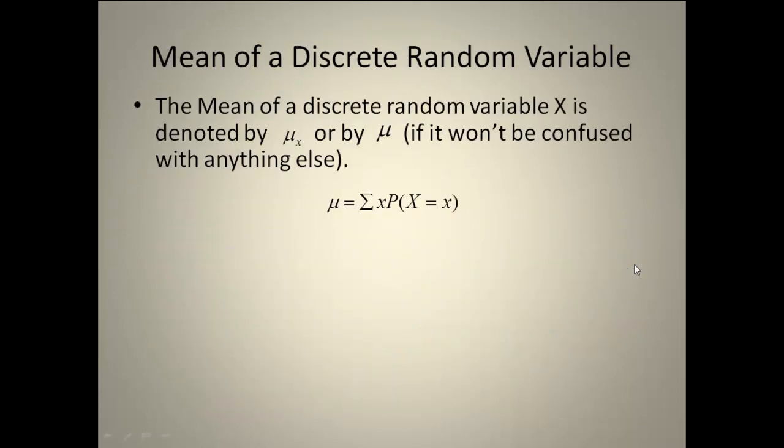So what this is bringing us to is that the mean of a discrete random variable is denoted by μ sub X or just μ if there's nothing else that it could be confused with. Sometimes we'll be talking about more than one variable, so we might have μ sub X and μ sub Y and μ sub M. It's just identifying the variable it's going with. We can do this formula. Remember, sigma means summation. This is telling us to take our X value and multiply it by its probability and then add those all up.